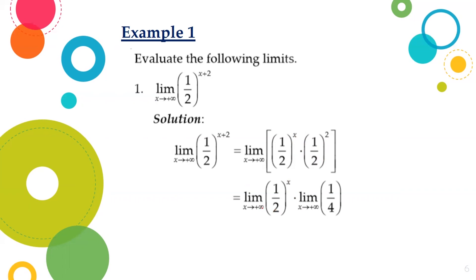So we will have the limit of (1/2)^x as x approaches positive infinity, times the limit of 1/4 as x approaches positive infinity. Applying the theorem, the first limit equals 0, while the limit of the constant 1/4 is 1/4. Hence, 0 times 1/4 equals 0. Therefore, the limit of (1/2)^(x+2) as x approaches positive infinity is equal to 0.